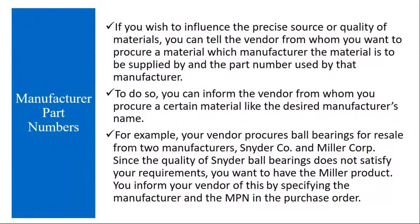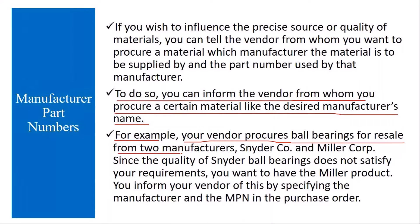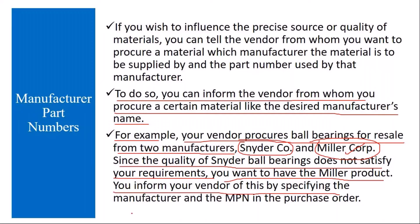To do so, you can inform the vendor of the desired manufacturer during the procurement process — during purchase order creation. For example, your vendor procures ball bearings for resale from two manufacturers: Cinder Company and Miller Corporation. Since the quality of Cinder ball bearings does not satisfy your requirements, you want to always have the ball bearings supplied by Miller. You inform your vendor of this by specifying the manufacturer and the MPN in the purchase order.